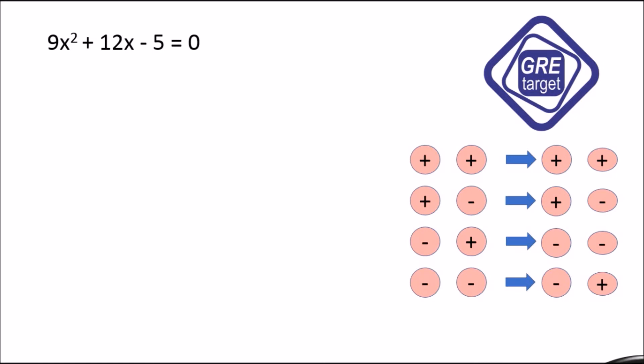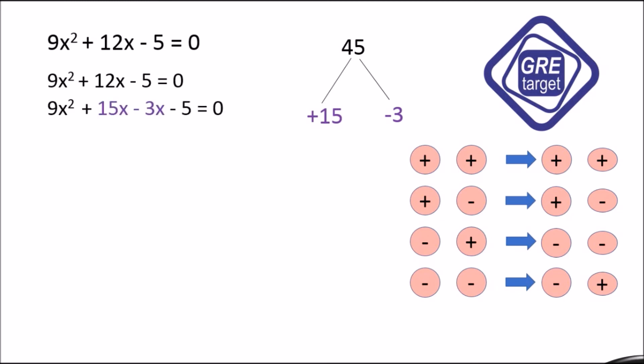Our last example is 9x² + 12x - 5 = 0. The signs are plus and minus, so we go for positive and negative values. Multiply 9 × 5 = 45; we split 12 as 15 and -3, since 15 × (-3) = -45 and 15 + (-3) = 12. Replace 12x with 15x - 3x. Take common 3x from the first two terms giving 3x(3x + 5), then take common -1 from the last two terms giving -1(3x + 5).